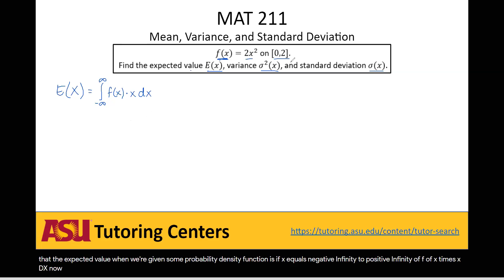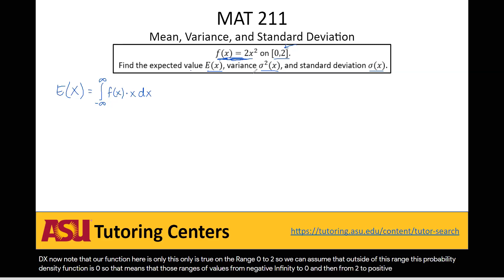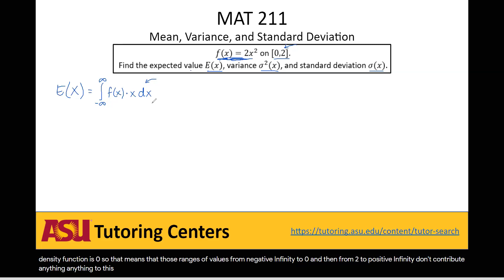Now note that our function here is only true on the range 0 to 2. So we can assume that outside of this range, this probability density function is 0. So that means that those ranges of values from negative infinity to 0 and then from 2 to positive infinity don't contribute anything to this integral. So we can actually go ahead and ignore those.